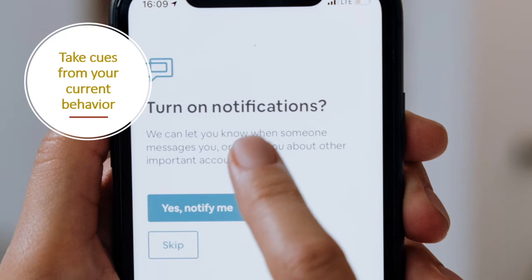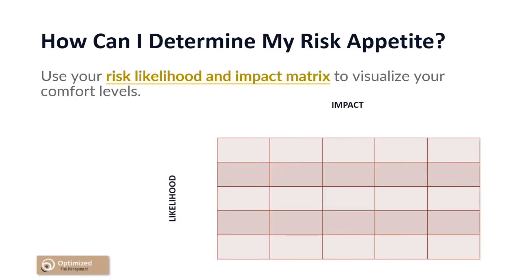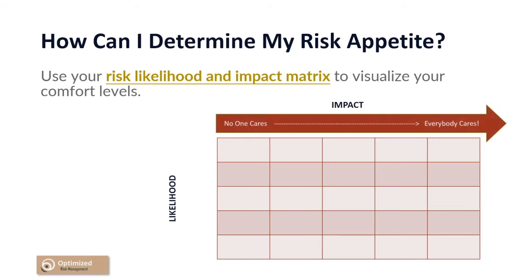You can use an impact and likelihood matrix to flesh out the answers to these questions. This matrix helps you think about a risk from two perspectives: the likelihood of it occurring and the impact should it occur. The impact should be assessed on increasing scales, from the point when no one cares if the risk were to happen, to the point when everybody would care. When you consider your likelihood states, this should also increase in scale, from the point when the risk is rarely likely to happen to the point where it is likely to occur very frequently.